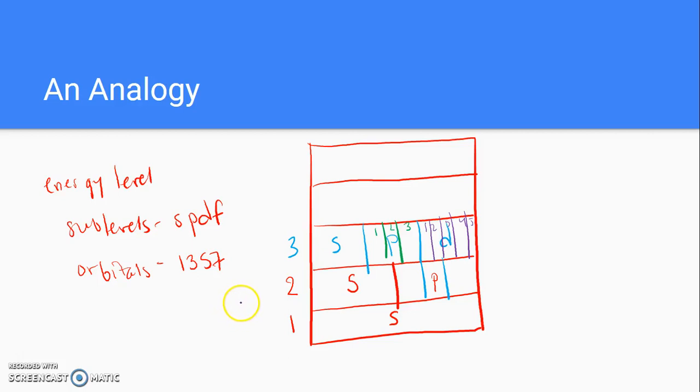So we're picking back up with our analogy of the breakdown of the energy levels. What we have at this point is our apartment building with our ground floor, and it has a second floor and a third floor at this point.